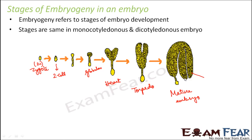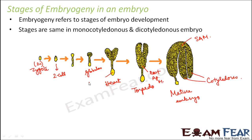In the mature embryo, the two cotyledons form its base. There is a root apical meristem from which the roots will arise, and a shoot apical meristem from which the shoot system will arise. There is also a basal cell present at the bottom. These are the different stages through which the zygote passes to finally form a mature embryo.